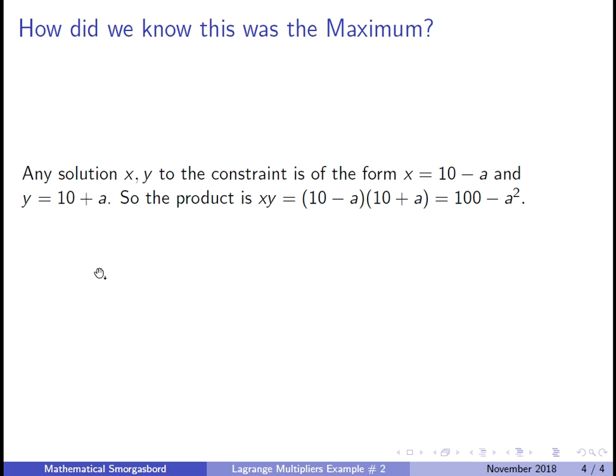But that means the product is going to be 10 minus a times 10 plus a, which equals 100 minus a squared. Now this is at most 100, because a squared is at the very least zero. So this is an algebraic argument for why what we have is actually our maximum.